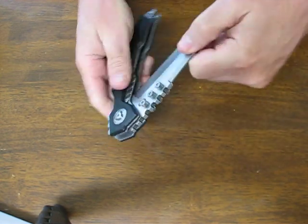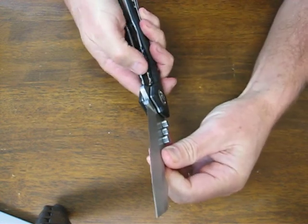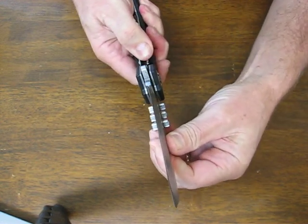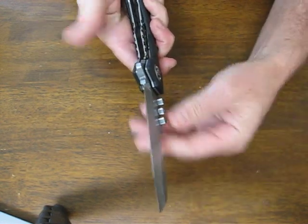And when the need arises to open it quietly you can just hold the liner lock till it's open and release it and it's completely silent.